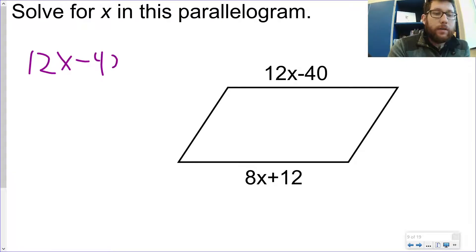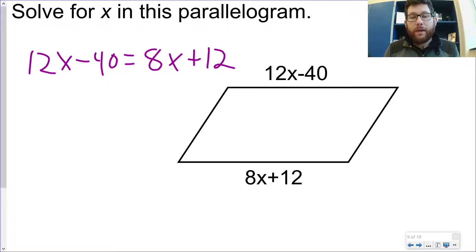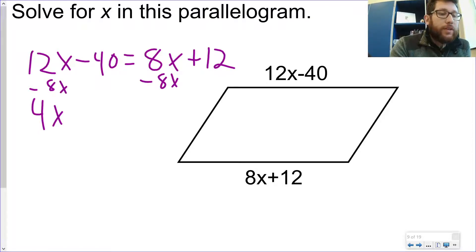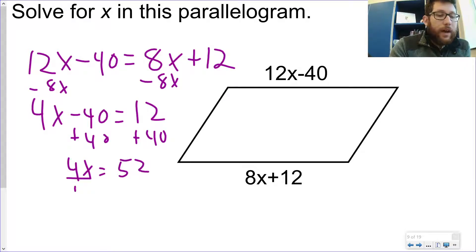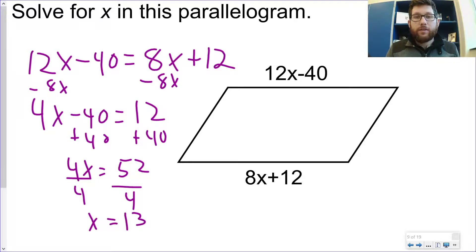12x minus 40 is equal to 8x plus 12. The nice thing about solving for sides and angles in parallelograms is if they look equal to each other, they almost always are equal to each other. So look, these sides look like they're the same size. And so I could plug this into Desmos to solve 12x minus 40 equals 8x plus 12. I'll do it by hand here instead of Desmos. I'm going to subtract 8x on both sides. But you could plug this into Desmos if you wanted to. It's equal to 12. I'm going to add 40 to both sides. So I get 4x is equal to 52. I'm going to divide by 4 on both sides. So x is equal to 13. So that would be my final answer. So use Desmos if you want to. Solve it by hand if you want to. You could even use Desmos to check.